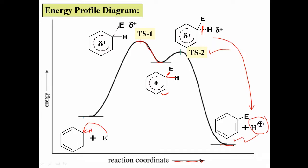In summary, electrophilic substitution involves a two-step mechanism: the first step forms the arenium ion (carbocation) intermediate, and the second step involves loss of a proton to give the final substituted product. The energy profile diagram shows how energy changes during both steps of this process.